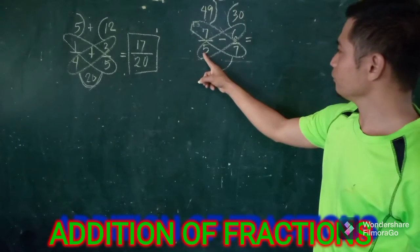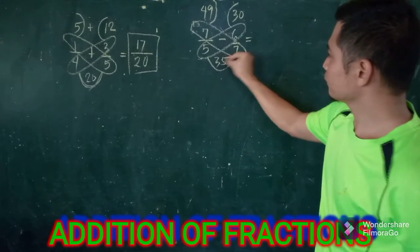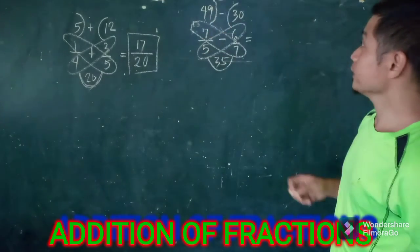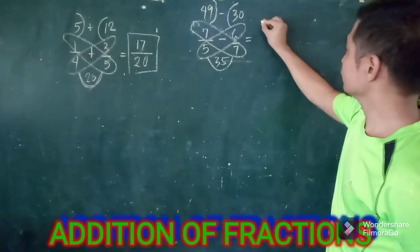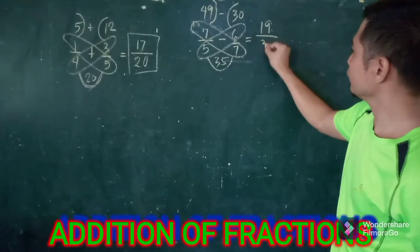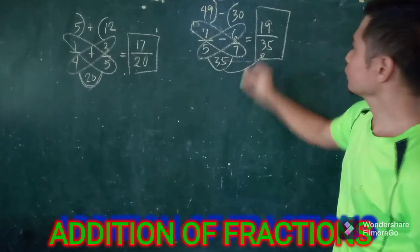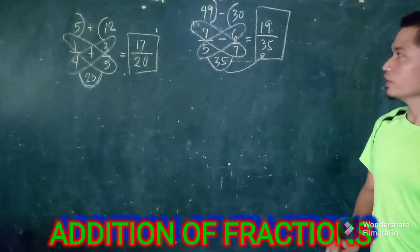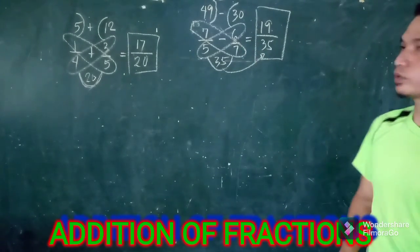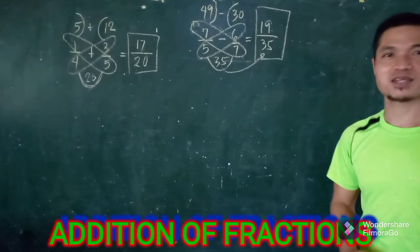Then we have 5 times 7 is 35 for the denominator. Now we subtract: 49 minus 30 is 19, divided by 35. So therefore, 7/5 minus 6/7 equals 19 over 35, using the butterfly method.